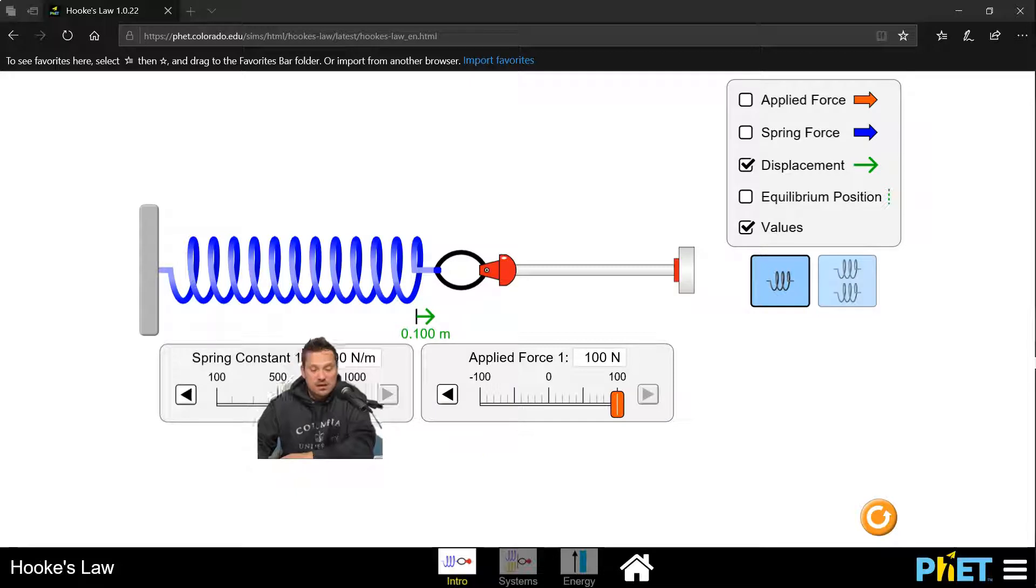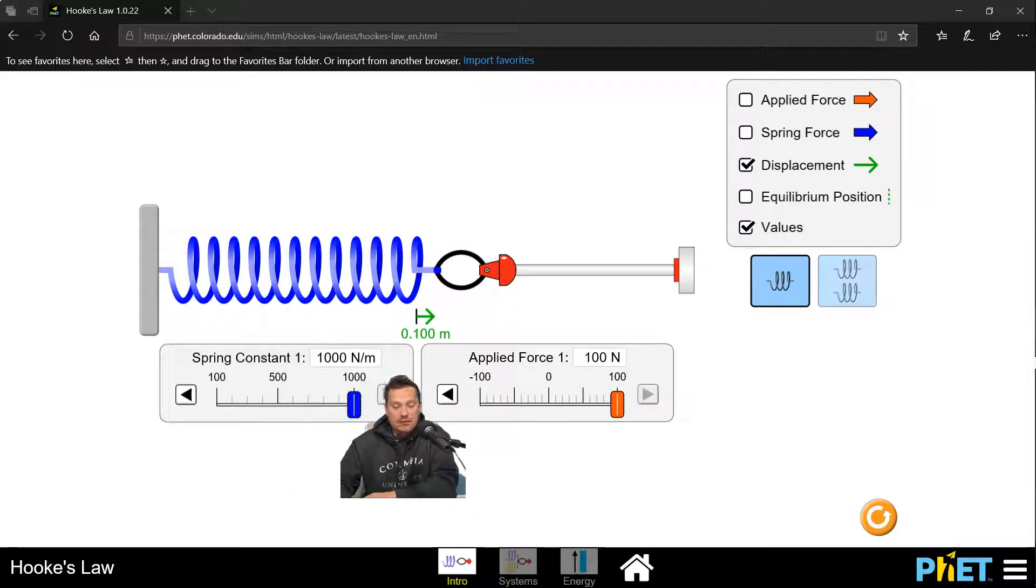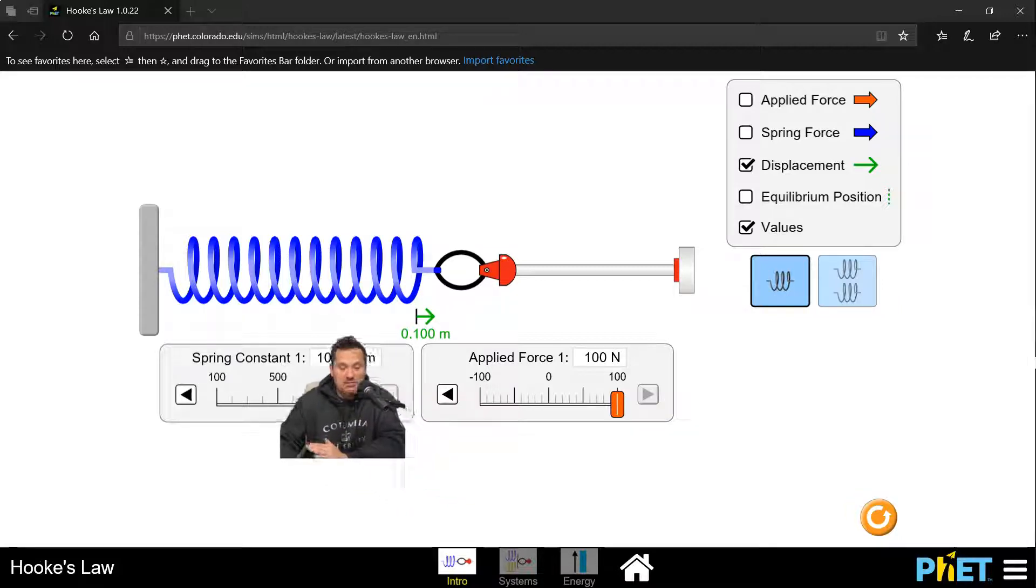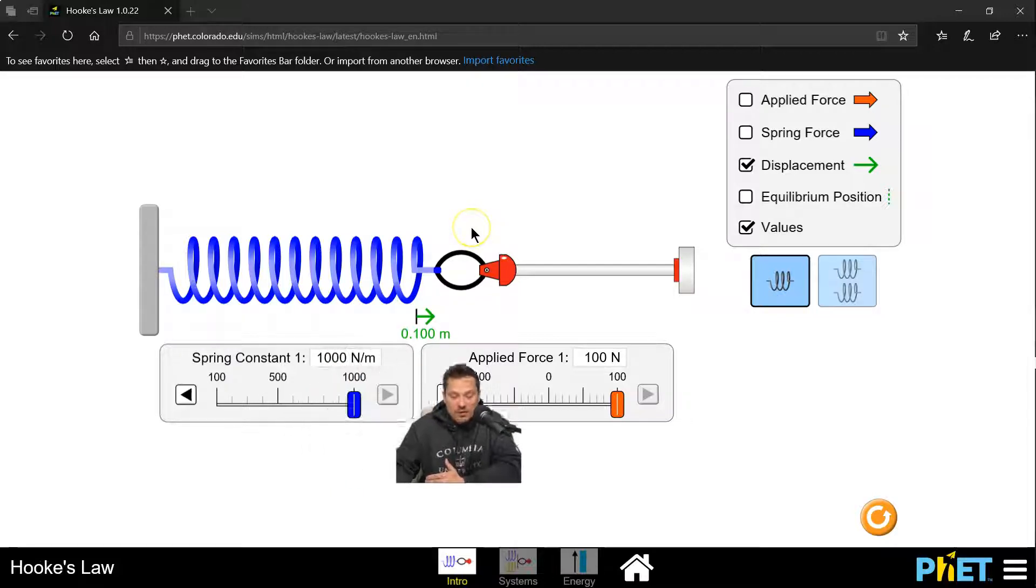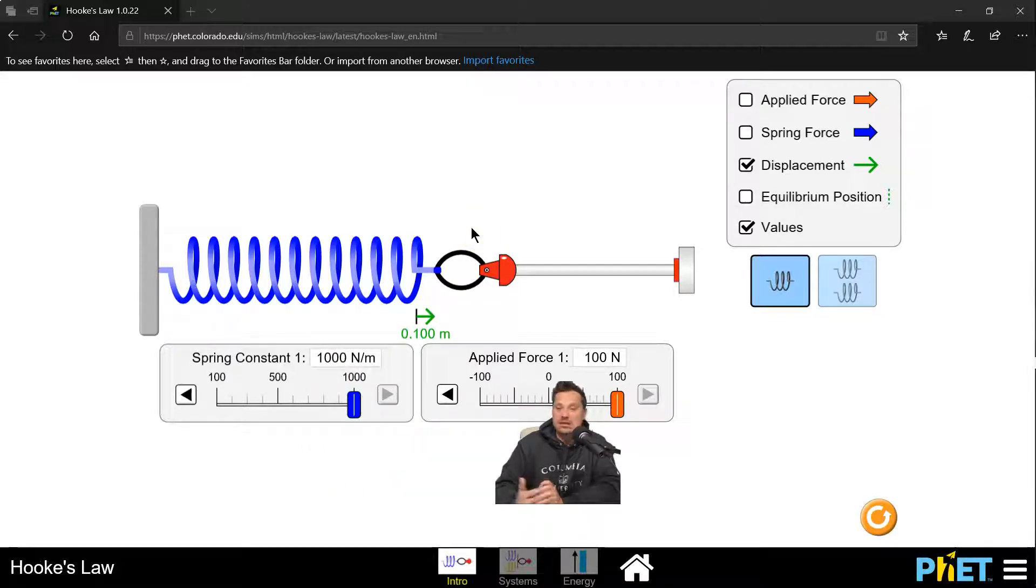And then the other question might be, naturally enough, what if I did want to actually stretch the spring or compress it by 1 meter, given that its constant is 1,000 newtons per meter? What should be the maximum force on our slider if I wanted, for example, to recreate the slider with a maximum value on it? Well, in that case, I would have to have a slider with a maximum value of 1,000 newtons.